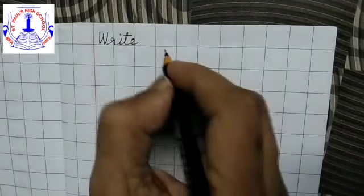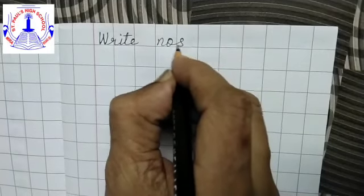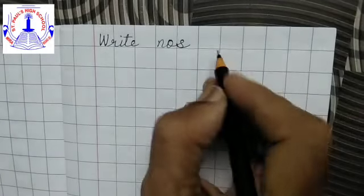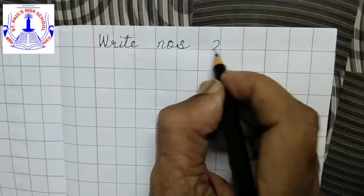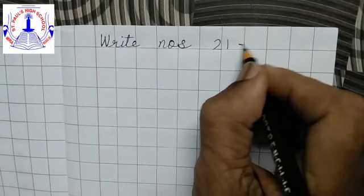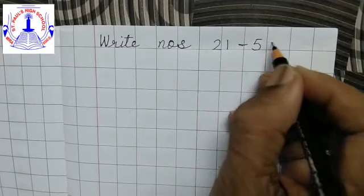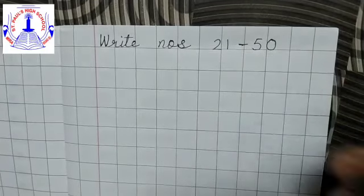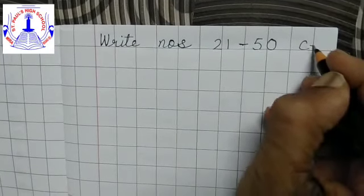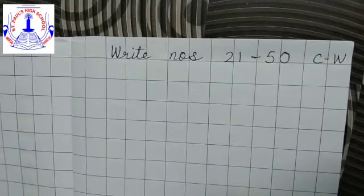Now N O S, numbers. 2 and 1, 21. Small sleeping line, then 5 and 0, 50. Now write capital C, small sleeping line and capital W. That is classwork.